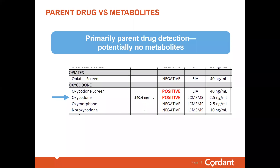Let's look at some specific examples on interpretation and some common questions around oral fluid. Here's an example of a sample where there are no metabolites present — this is what you expect to see in a totally normal oral fluid sample. Oral fluid provides a snapshot of drugs actively circulating in the bloodstream, which are primarily the parent drug, and the metabolites themselves are rapidly cleared from the body going to waste.